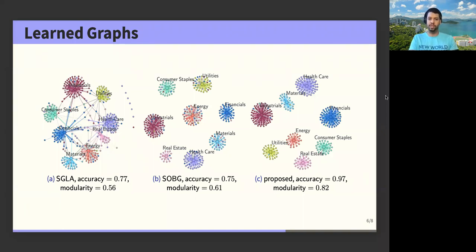SOBG on the other hand, the graph in the middle, does not suffer from these isolated nodes. However, the accuracy is not as good as our proposed method that achieves 97% accuracy. This accuracy number is computed based on labels given by the industry standard, the so-called GICS.